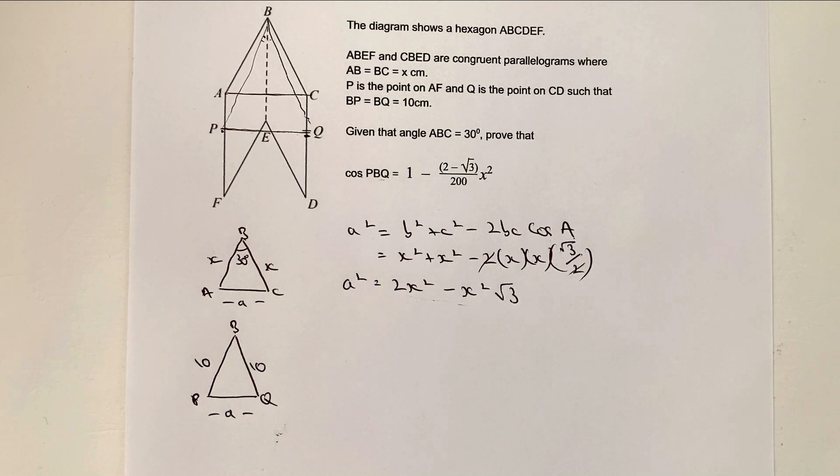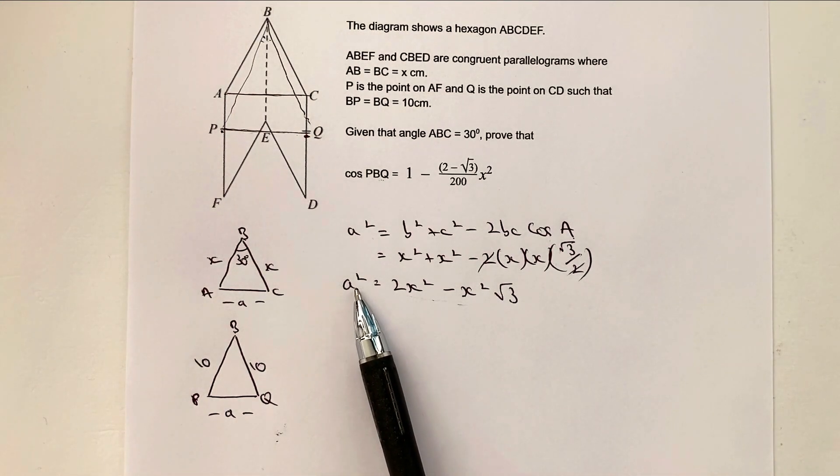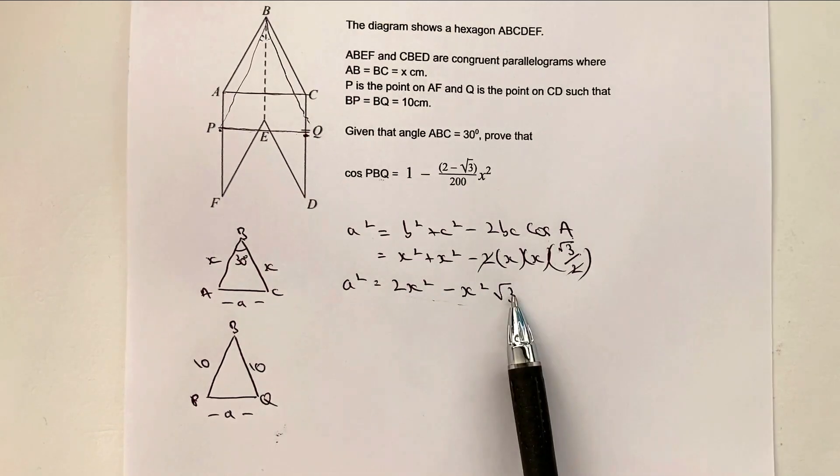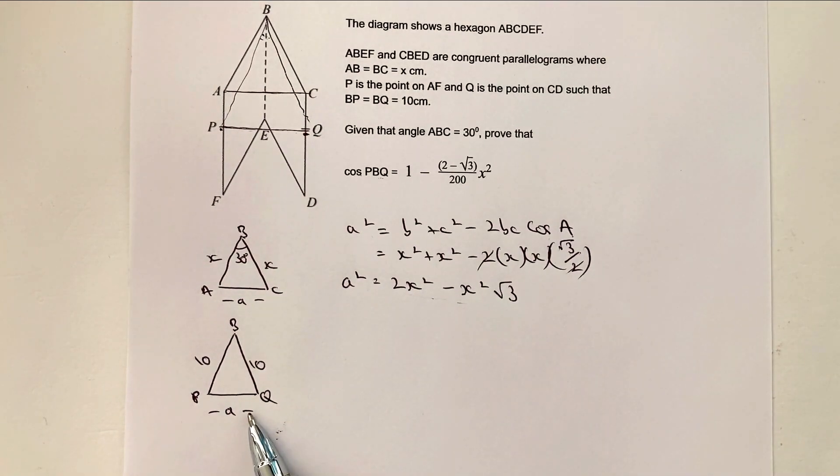Now, if you've been doing these sorts of questions for a little while, you might now want to just stop the video and have a go at this. Because what I'm basically saying is that I've got an expression here for a squared. I've got this. I'm going to do exactly the same for this A or A squared.